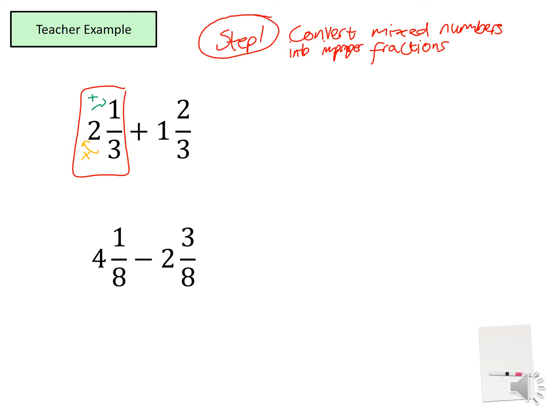So two times three is six, add the one, you get seven. So that converts to seven thirds. Over here again, one times three is three, and that three add two becomes five. So we have seven thirds plus five thirds.